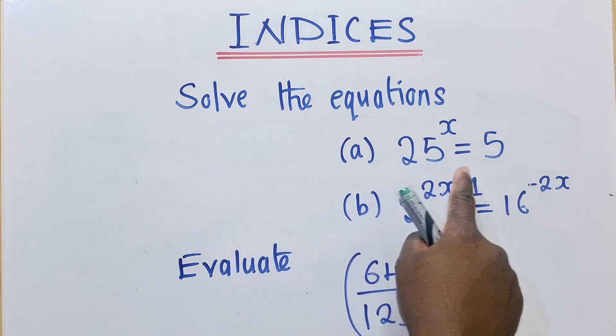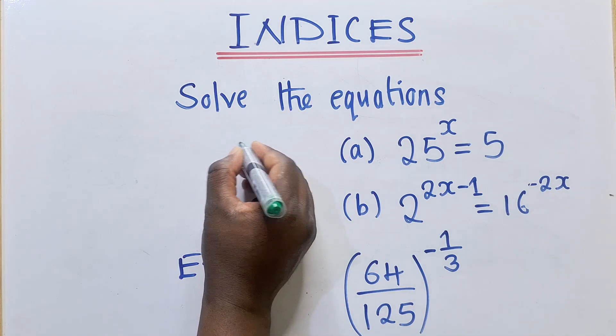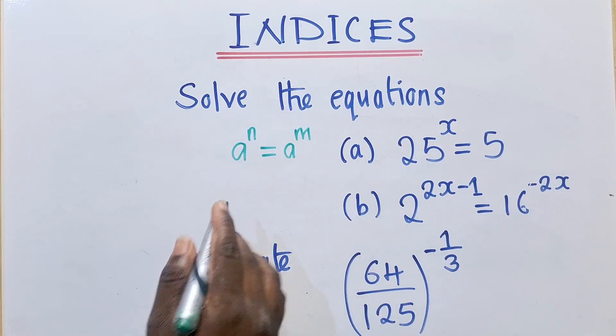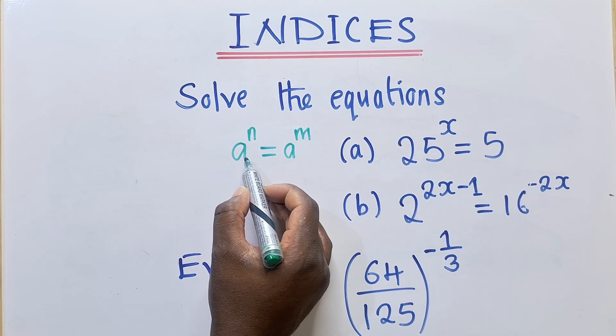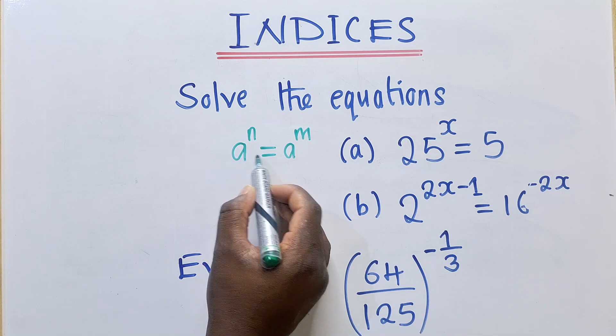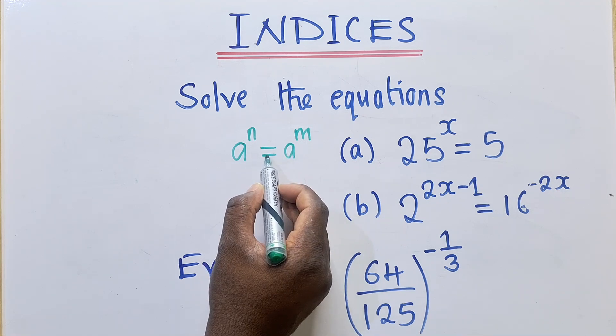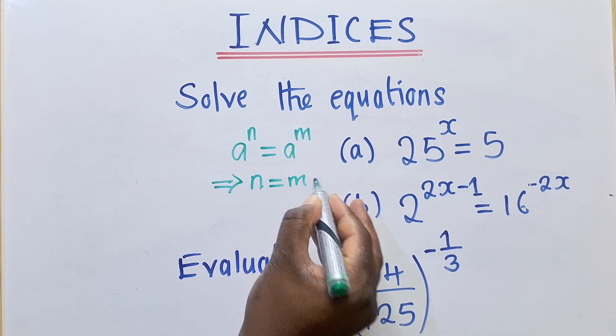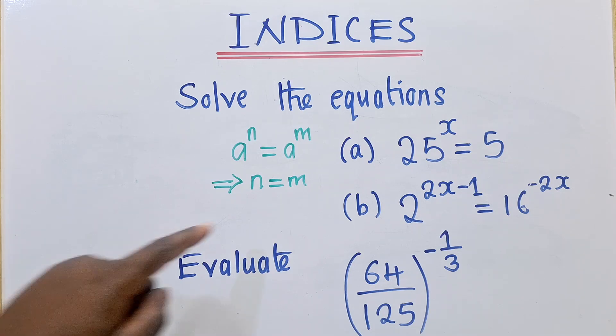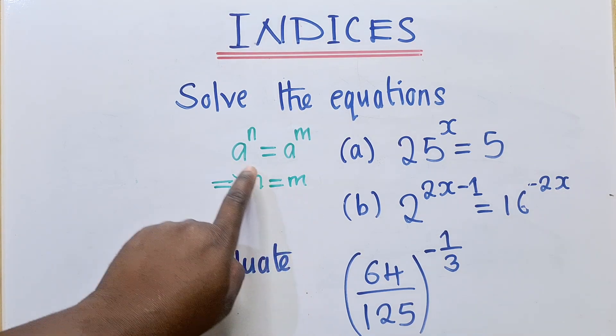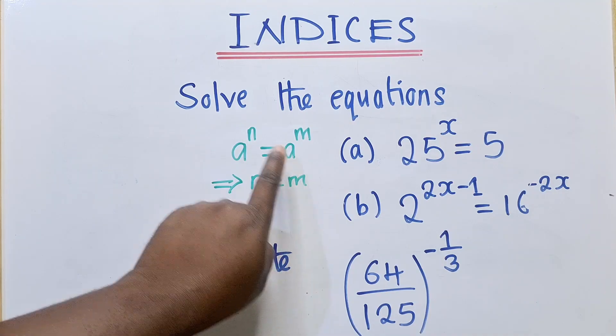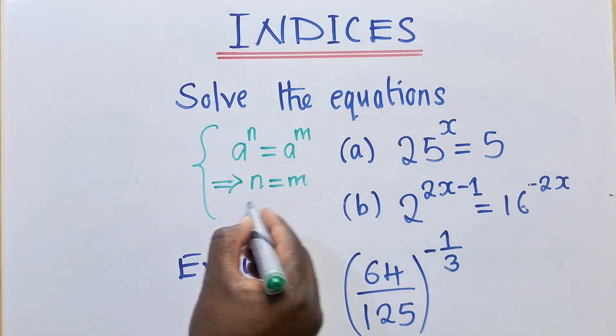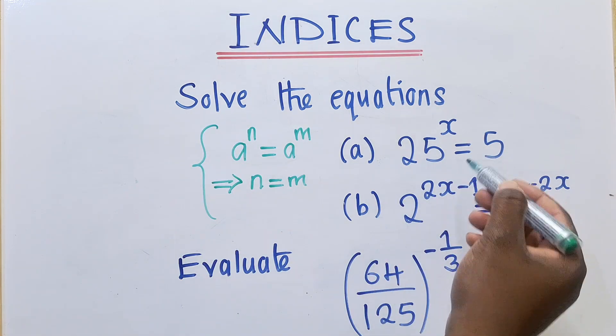So for the first question here, we need to understand this property. It's under indices. In case you don't know, please keep this in your mind. So this property or this law says that when you've got A as a base and A, the bases are equal to each other, this simply means the powers are also equal to each other, regardless of how they look. So this is N, this is M. Provided the bases are the same, meaning the powers, regardless of how they look, they are also equal to each other. So this property is very important and is what I want to apply on this question.